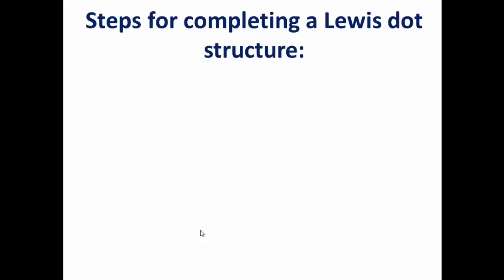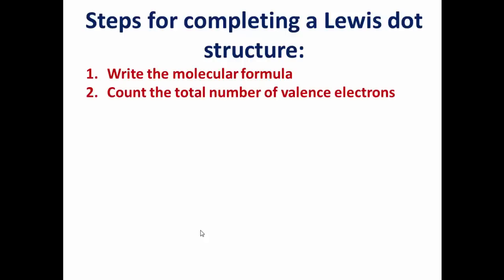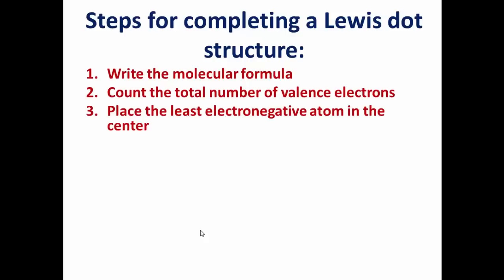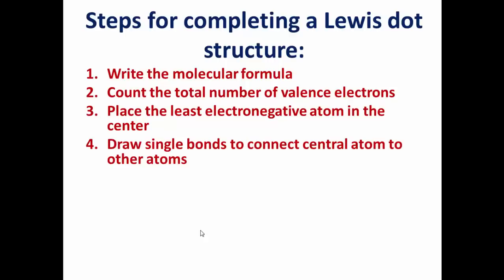Anytime you want to draw a Lewis dot structure, the very first thing you need to do is write out the molecular formula. Next, you need to count the total number of valence electrons. Third, you start drawing your Lewis dot structure by placing the least electronegative atom in the center. Fourth, you need to draw single bonds to connect the central atom to all the other atoms. You typically want to draw the most symmetric structure you possibly can.